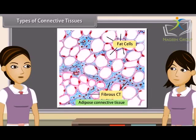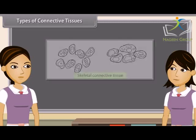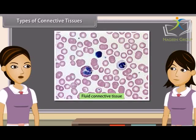Adipose connective tissue is basically an aggregation of fat cells, also known as adipocytes. These fat cells are oval or round, filled with a large droplet of fat. Skeletal connective tissue contains cartilage and bone, which form the endoskeleton of the vertebrate body. Fluid connective tissue links the different parts of the body and maintains continuity in the body; it includes blood and lymph.